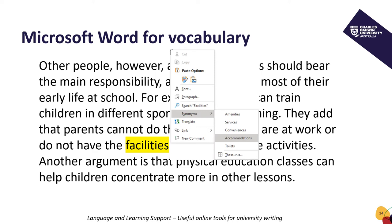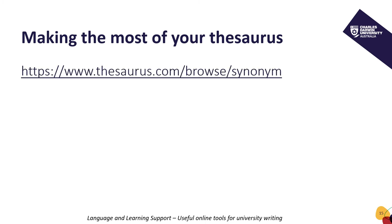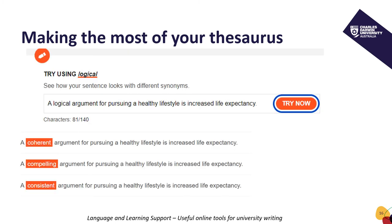If we want more options, we can always use the thesaurus. A good thesaurus will provide more synonym options than Word, but remember it's important to check synonyms carefully and never use an unfamiliar word without thorough investigation. A good online thesaurus may have other useful functions in addition to suggesting synonyms. Let's look at www.thesaurus.com/browse/synonym. This thesaurus allows you to find synonyms and also see them in context. Three synonyms for 'logical' are placed in the same sentence to help the writer decide which alternative is most appropriate.